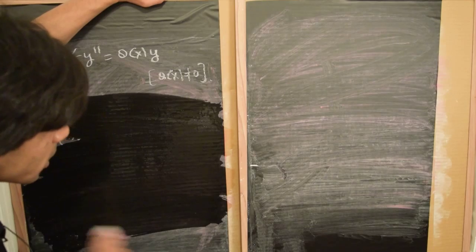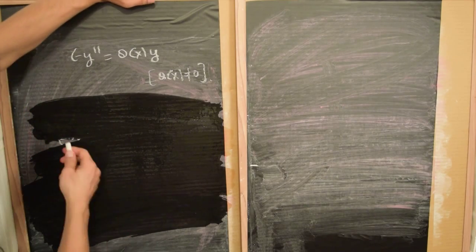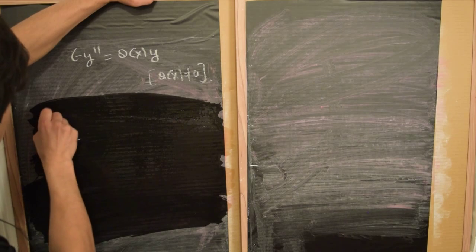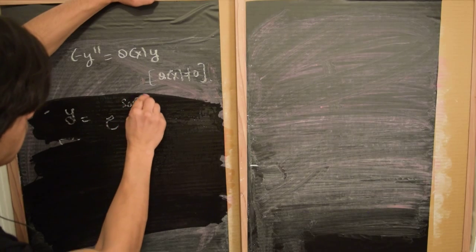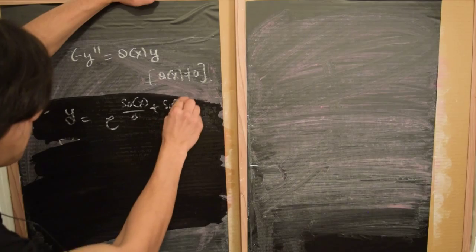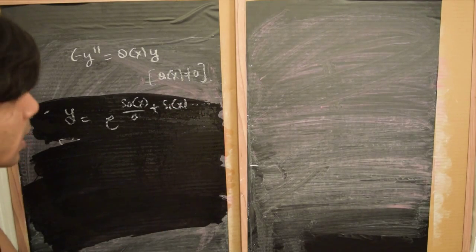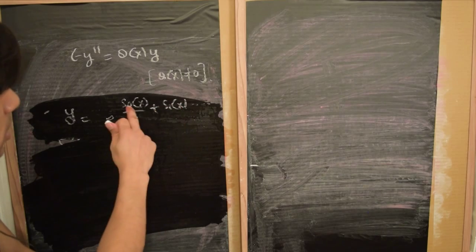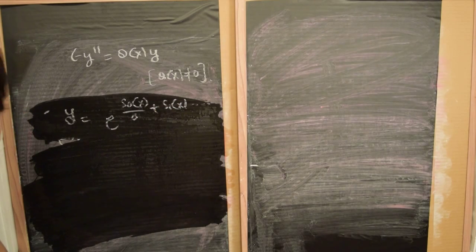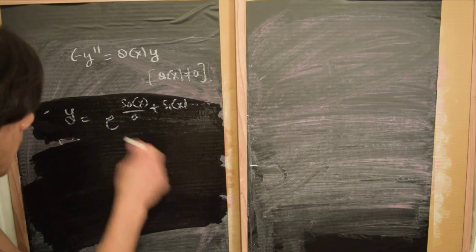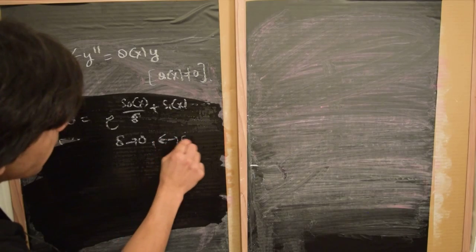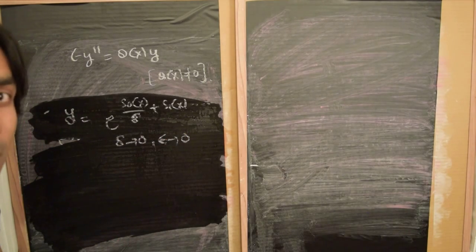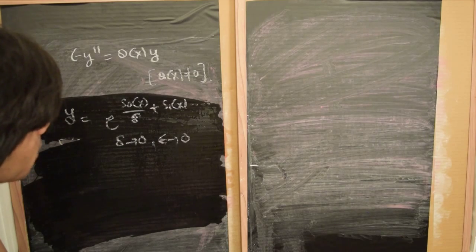So if we are looking for a WKB kind of solution, the basic idea is that we make an ansatz for the solution of the form: y equals e to the power of S₀(x)/δ plus S₁(x) plus higher order terms. For the purpose of this example, let's restrict ourselves to just calculating the two leading order terms S₀ and S₁, which is what we described in one of the previous videos as the physical optics approximation. There is also this small parameter delta which goes to zero as epsilon goes to zero, and we need to figure out how delta depends on epsilon using methods similar to the method of dominant balance.